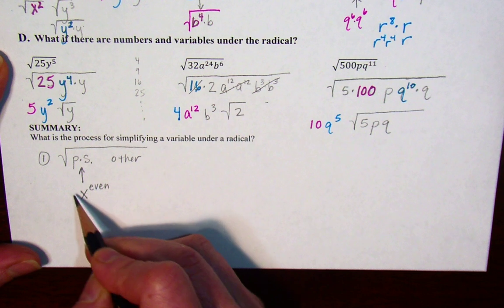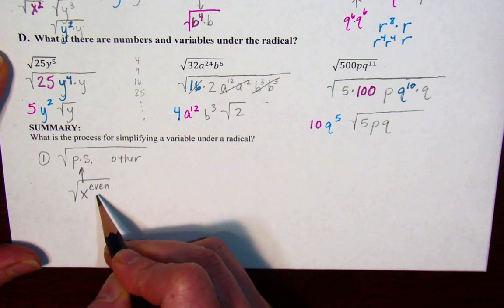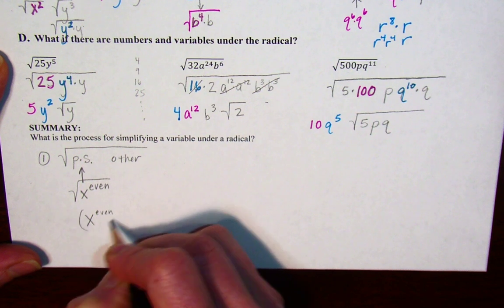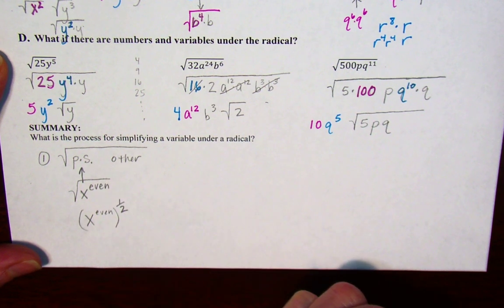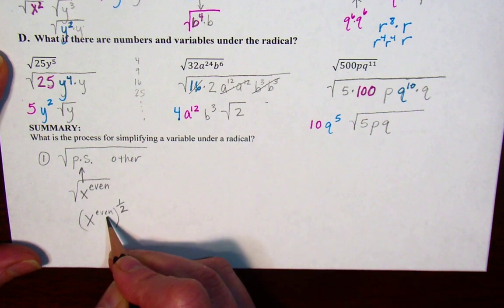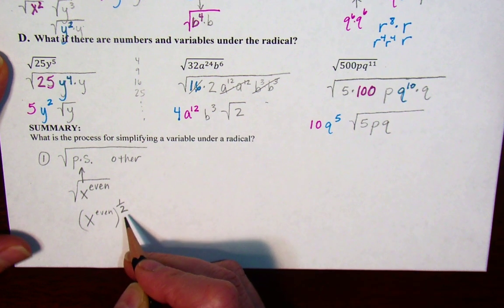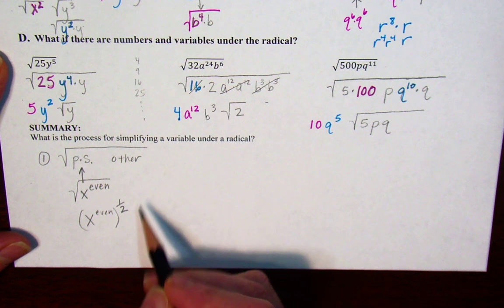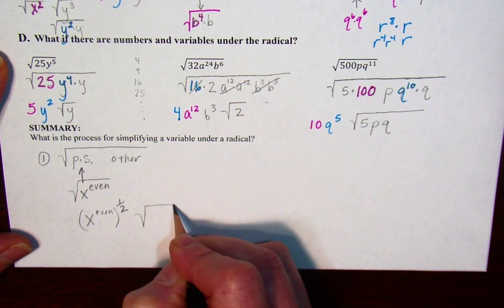And then you can square root this, and whatever that even numbered exponent is, remember that even numbered exponent square rooting is the same as raising to the one-half power, so you're just taking half of that even numbered exponent and putting it on the outside of the radical, and then that other number is still going to be left underneath the radical sign.